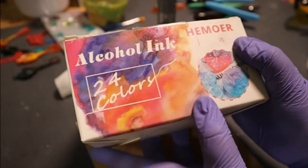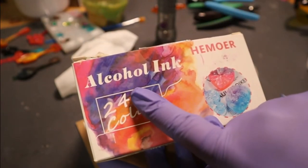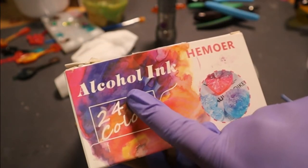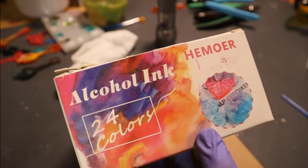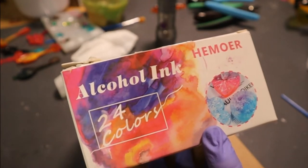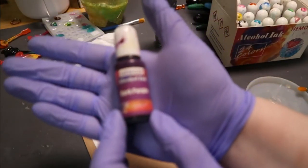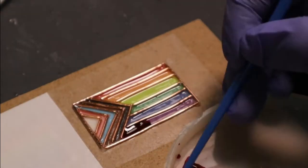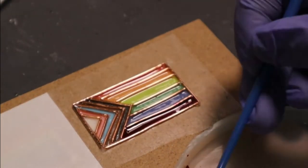We'll use alcohol inks to color the resin for each section. Just remember that the colors you use may not match mine exactly. You'll want to give the resin 30 to 60 seconds between colors. This cures the resin enough to prevent the colors from mixing.